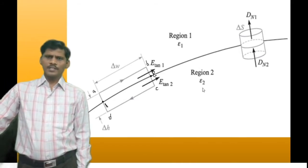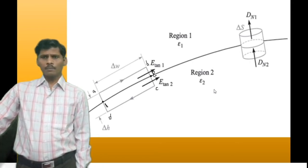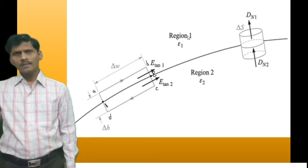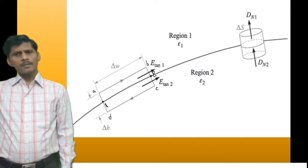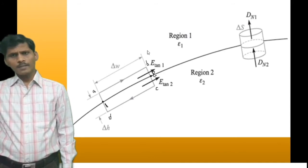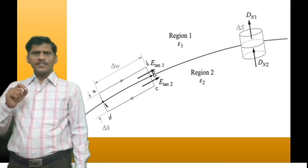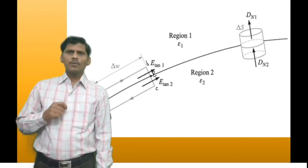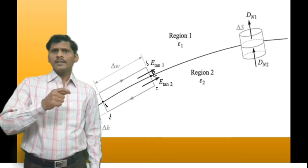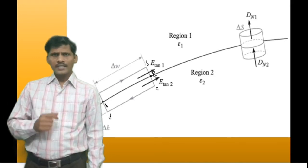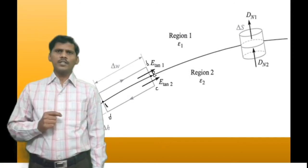This is region 1 and this is region 2 — dielectric material medium 1 and medium 2. In medium 1, the permittivity is epsilon 1; in medium 2, the permittivity is epsilon 2. In medium 1, the tangential component of electric field intensity is E-tangential-1; in medium 2, it is E-tangential-2. The normal component is E-normal-1 in medium 1 and E-normal-2 in medium 2.